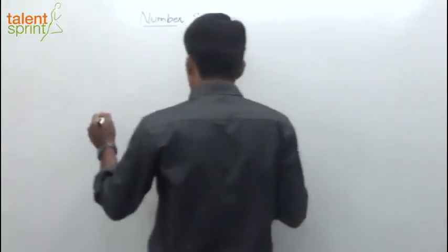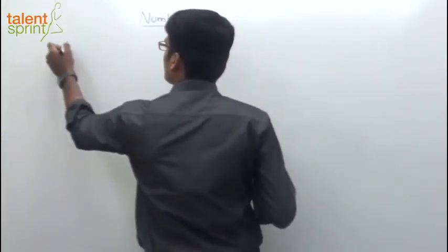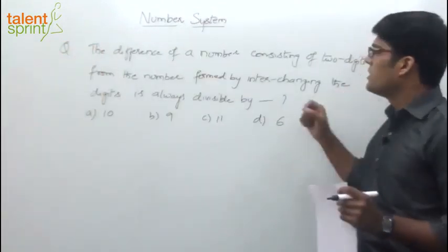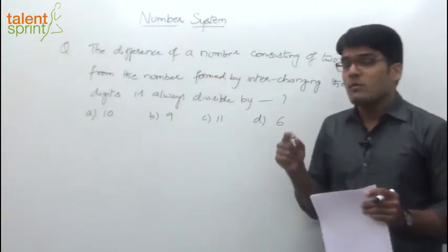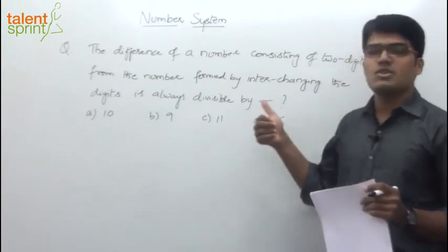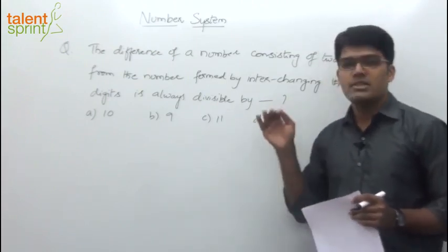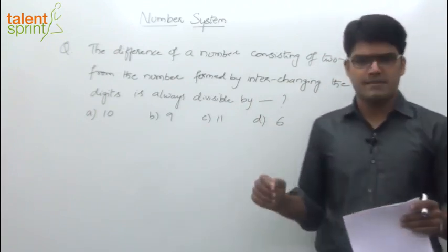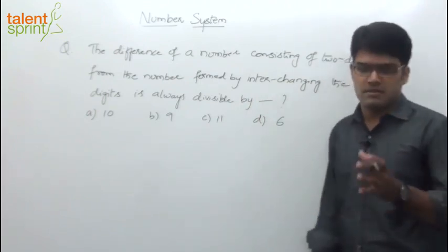First question: the difference of a number consisting of two digits from the number formed by interchanging the digits is always divisible by — 10, 9, 11, or 6? Now in this topic of number systems, if you go through the video, we have learned about this.